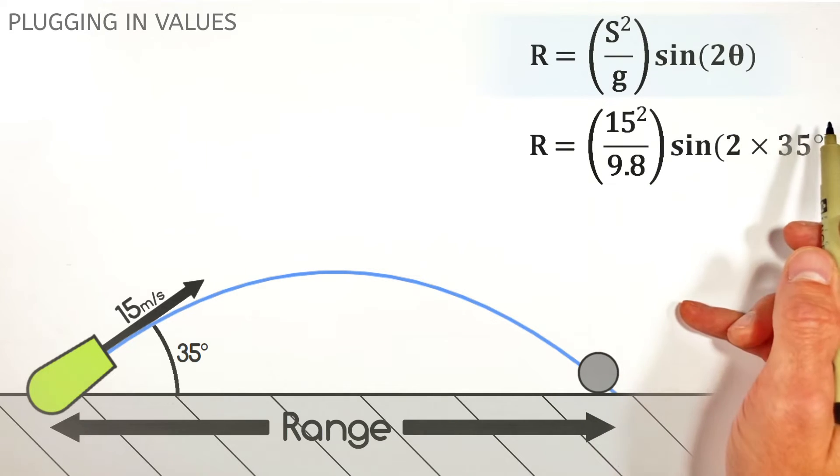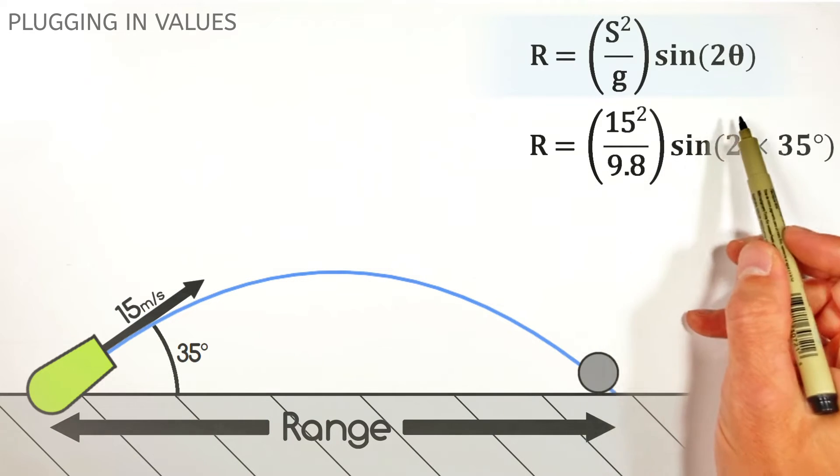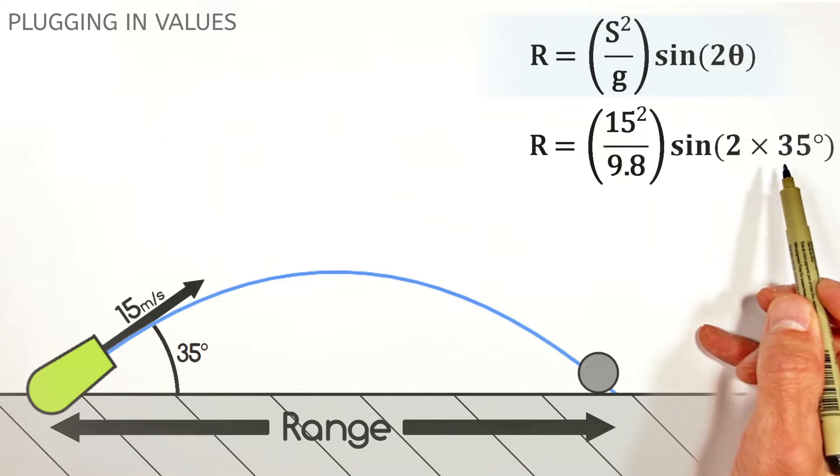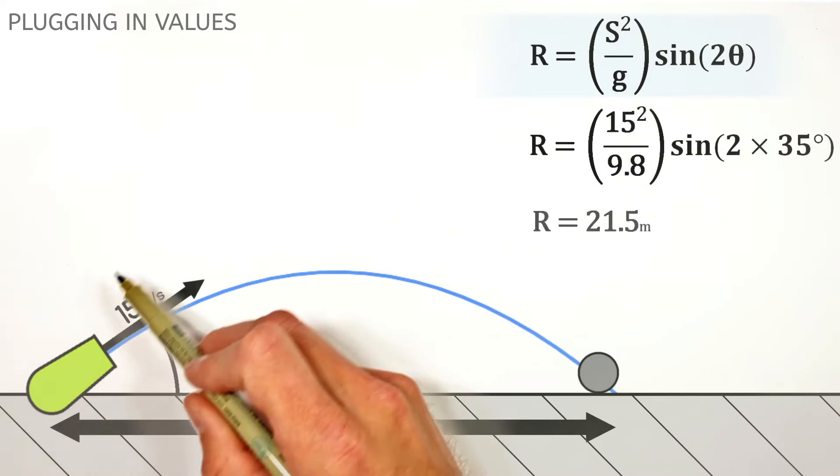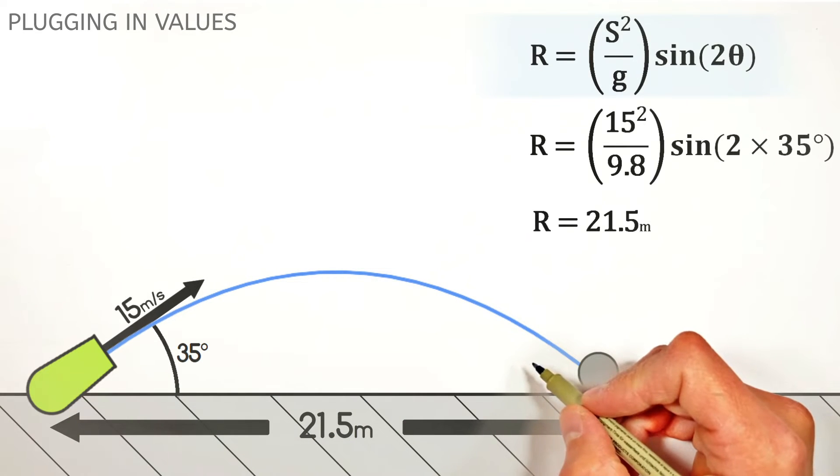And last, we've got this 2 theta term, which is really just 2 times this firing angle. So here we're going to have the sine of 2 times 35, or the sine of 70 degrees. And we find the horizontal range of this projectile, as it's fired through the air, is 21.5 meters.